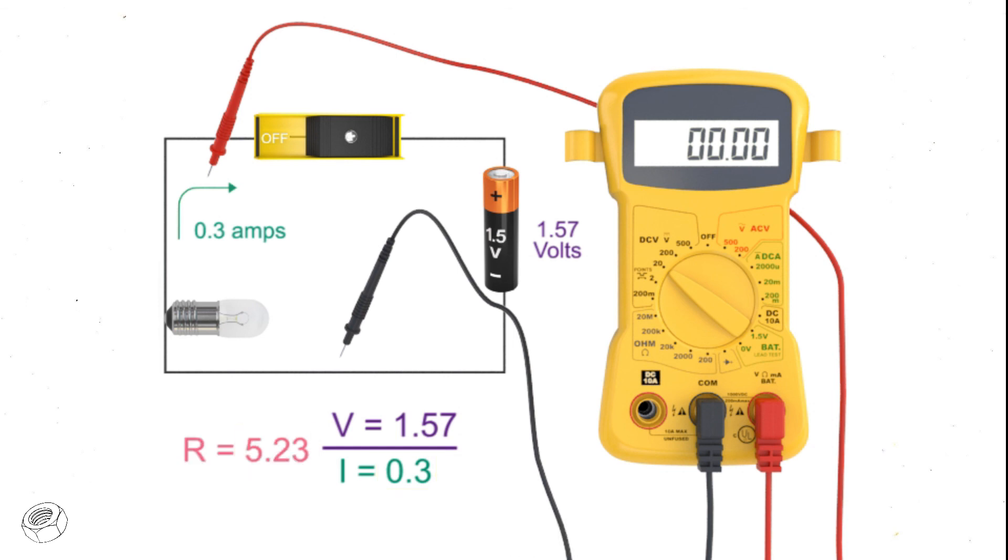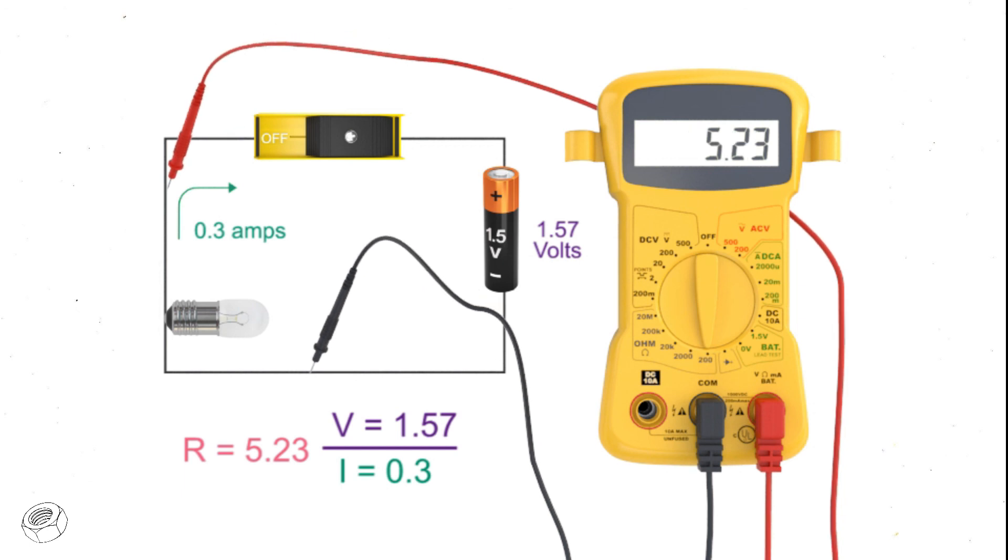Let's check the actual resistance of the light bulb using the meter. Make sure the switch of the circuit is open or in the off position so no external power is in the circuit. Look for the ohm symbol, which is the Greek letter omega, and switch the meter to 200. Now place the leads on either side of the light bulb. You should see a reading of 5.23 ohms.